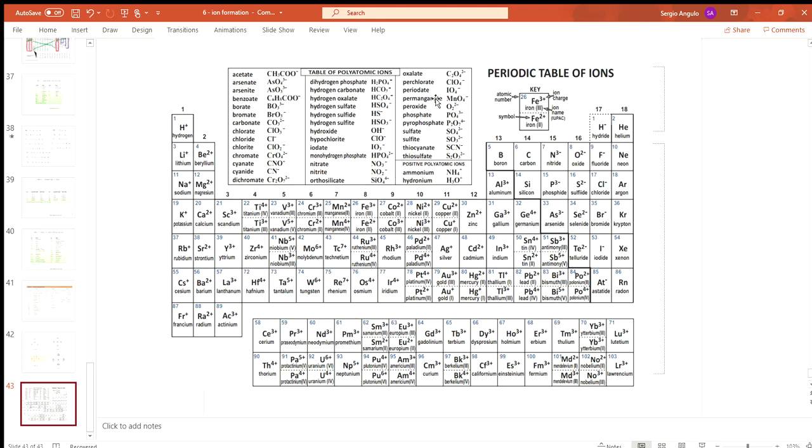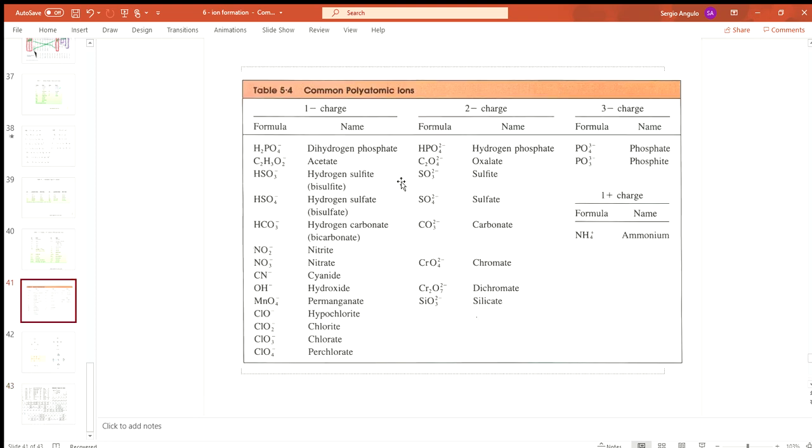Now there's also on this periodic table of ions a list of these guys here too. These guys are mostly the same but there are others. Just know that these tables of polyatomic ions aren't always the same. A lot of these are very common, so you'll see them in all tables, but when they fill out these tables, some people choose one, some people choose others. There are hundreds of these polyatomic ions, but these are some of the most common ones.